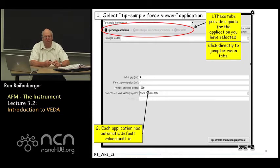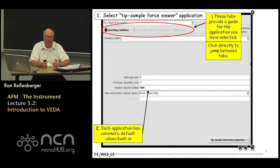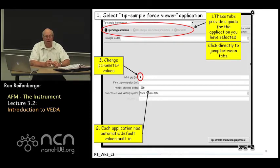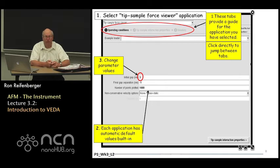The first tab to click on is the Operating Conditions tab. Here you have to specify a variety of parameters — where you want the tip to begin, where you want the tip to end, and how many data points you want to use in calculating the motion of the tip as it moves from its initial gap to its final gap separation. You'll notice that there are already default numbers entered under each application, so if you don't know what to do you can rely on the default numbers until you get a sense of what values are required. You can change these input parameter values very quickly — it's not a problem.